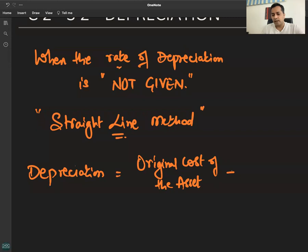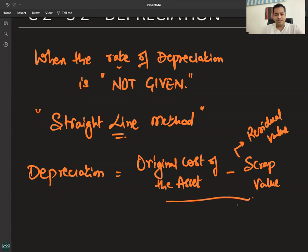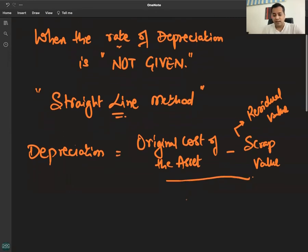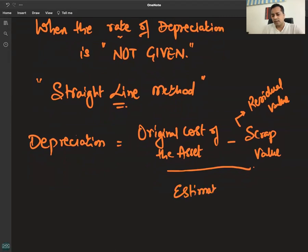Original cost of the asset minus scrap value, residual value of the asset, minus scrap value divided by estimated economic life, the number of years.